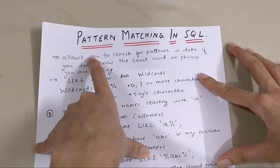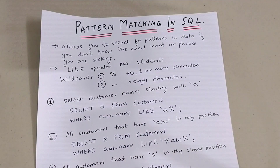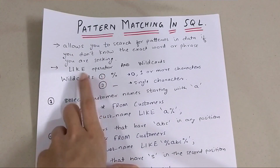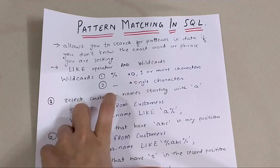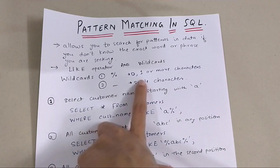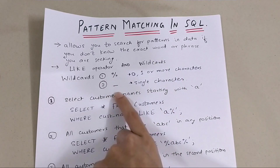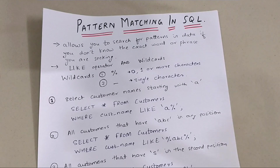Pattern matching is a combination of the LIKE operator with wildcards. We have basically two wildcards: one is the percentage sign and one is the underscore sign. The percentage sign means there are zero, one, or more characters, and the underscore means there is a single character. We will see that with examples — I have ten examples to make your understanding of pattern matching even better.